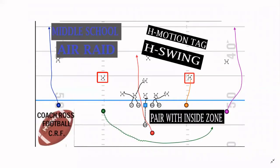Hey everyone, it's Coach Ross with Coach Ross Football. In today's video, I'll be discussing how to tag a motion and swing pass for your H receiver. It's great to pair with the inside zone run scheme. This tag adds a great little wrinkle into your offense.